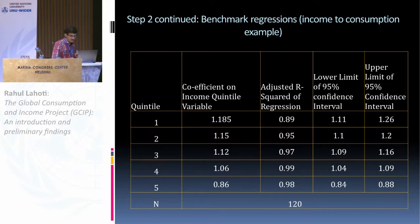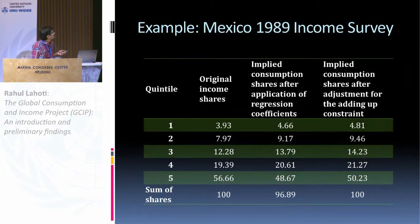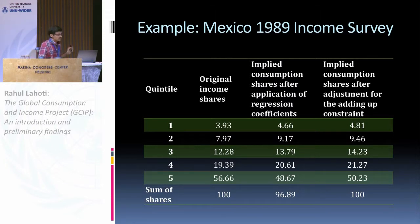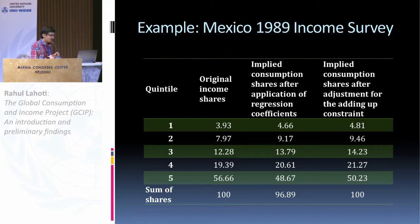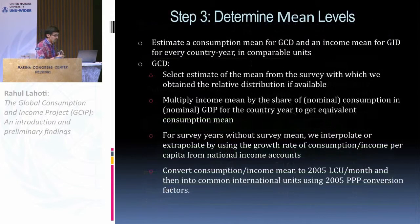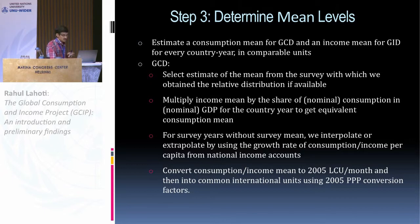Let me show an example of how this works. This is Mexico 1989, which has an income survey and we want to convert it into an equivalent consumption survey. The original income shares are in these columns. We applied the regression coefficients to get the new shares — the bottom quintile moves from 3.93 to 4.66. Because there are five different regressions, this doesn't add up to 100, so whatever shortfall exists is equally proportionally distributed across the five quintiles. The bottom then moves from 3.93 to 4.81, whereas the top share moves from 56 income share to an equivalent consumption share of 50.23. We do this across the dataset wherever we have an income survey for the global consumption dataset and the reverse for the income dataset.